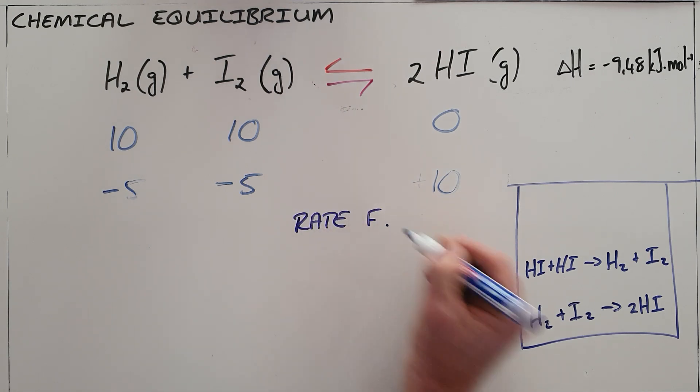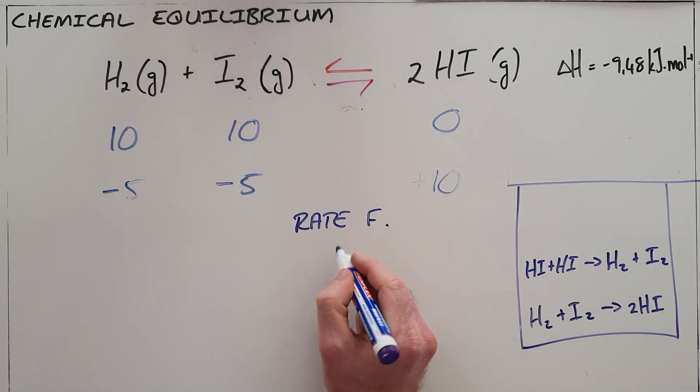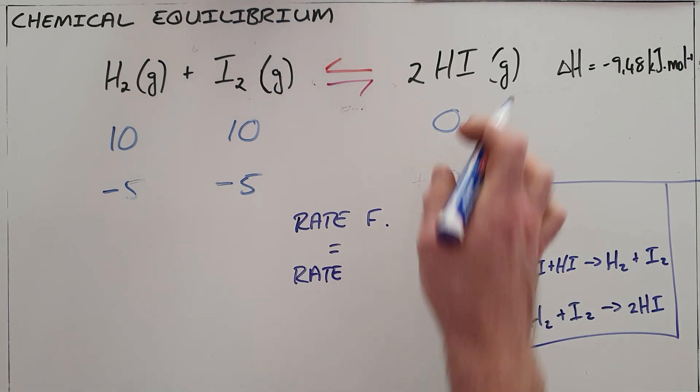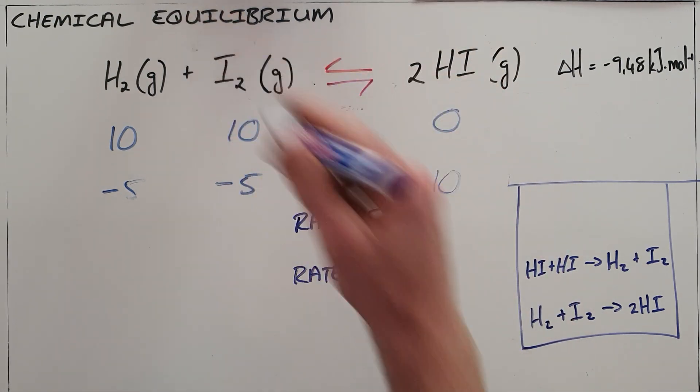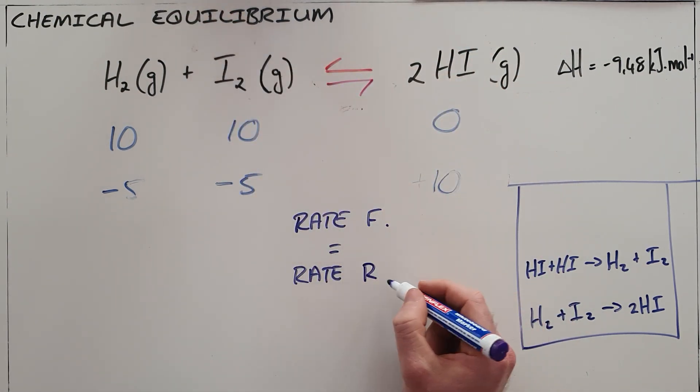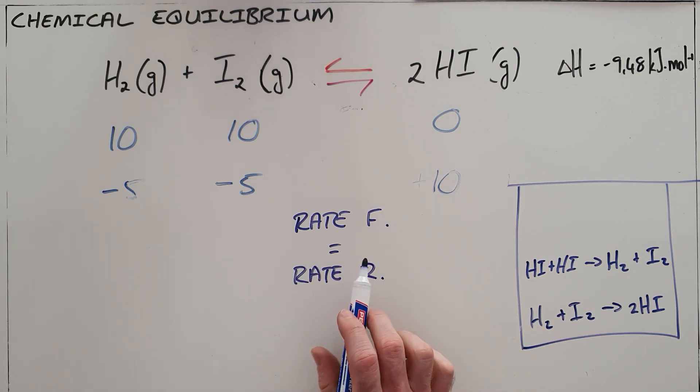At the point where the rate of the forward reaction is equal to the rate at which the reverse reaction is converting products back into reactants, we say that we have established a chemical equilibrium.